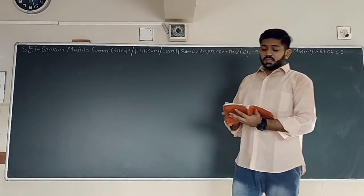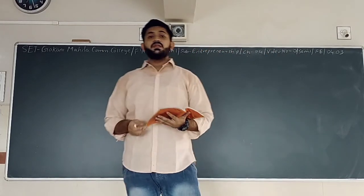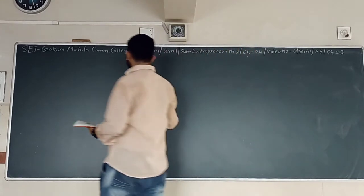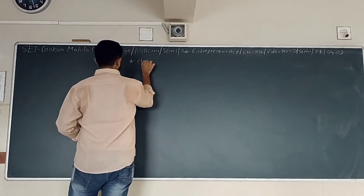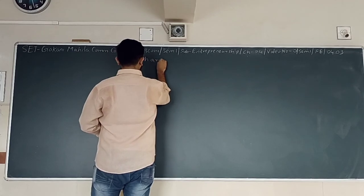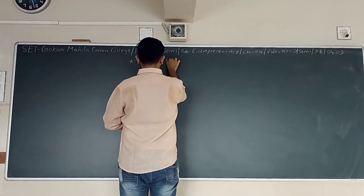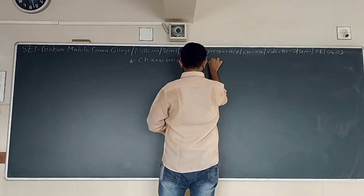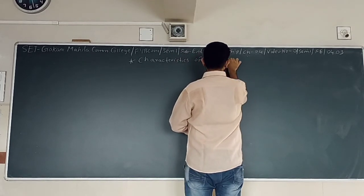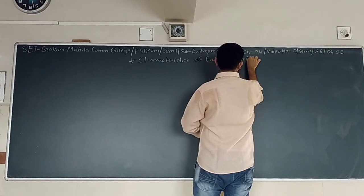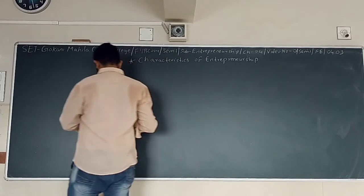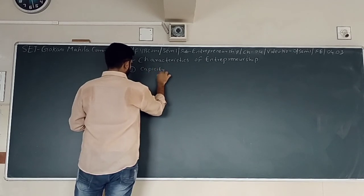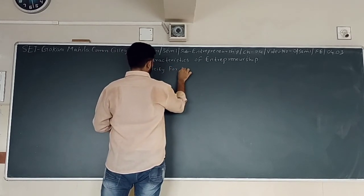Hello students. In the last lecture we started with characteristics that are fixed on the entrepreneur. We have studied 6 characteristics. The second determinant — the first we studied was capacity for risk value.